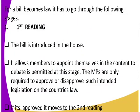The first stage is the first reading. After the bill has been drafted, it goes to the first reading. The bill is introduced in the House, and it allows members to acquaint themselves with the content and to debate. Debate is permitted at this stage. The MPs are only required to approve or disapprove such internal legislation. If it is approved, it moves to the second reading.